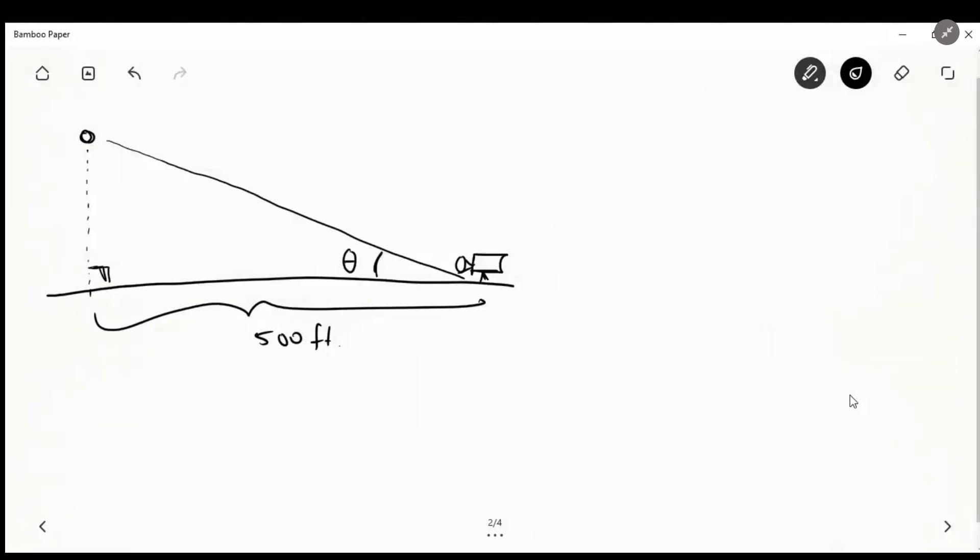We know that this angle here, we're going to call theta. So since we're given a height, which we calculated, and we're given a leg here which is 500, we know from SOHCAHTOA that the tangent of theta is opposite over adjacent or H of T over 500.